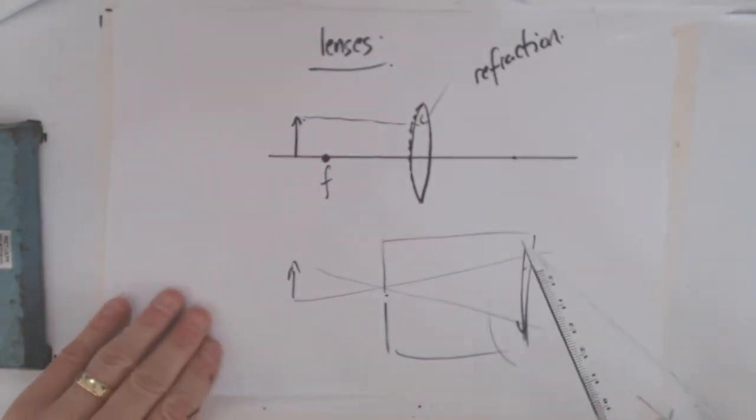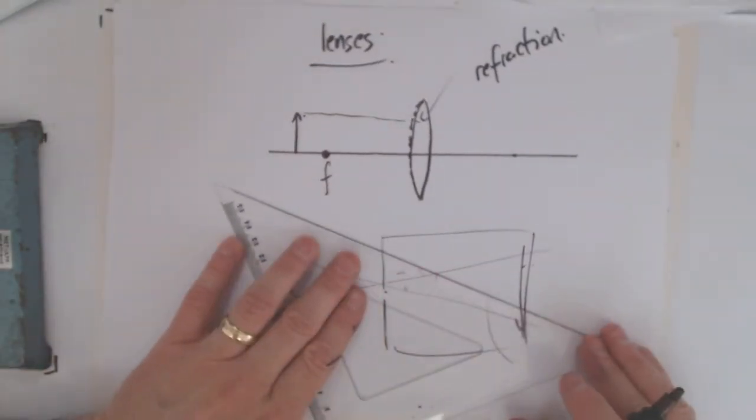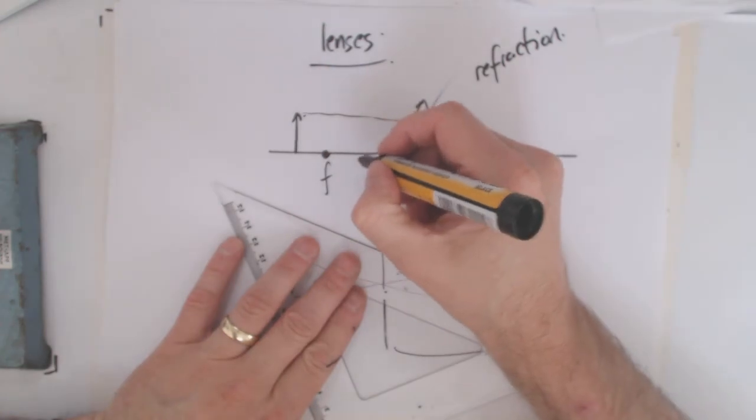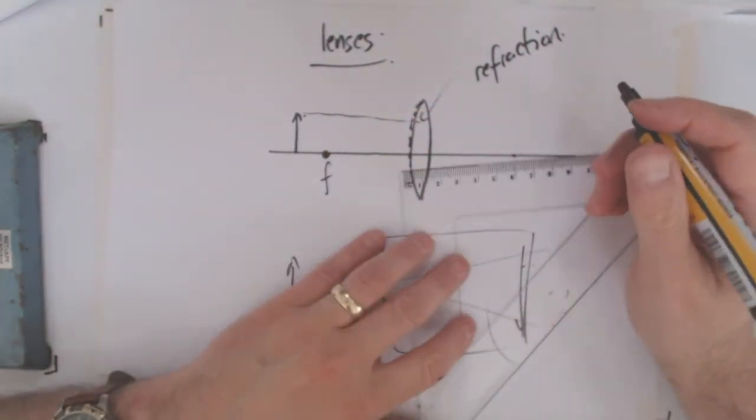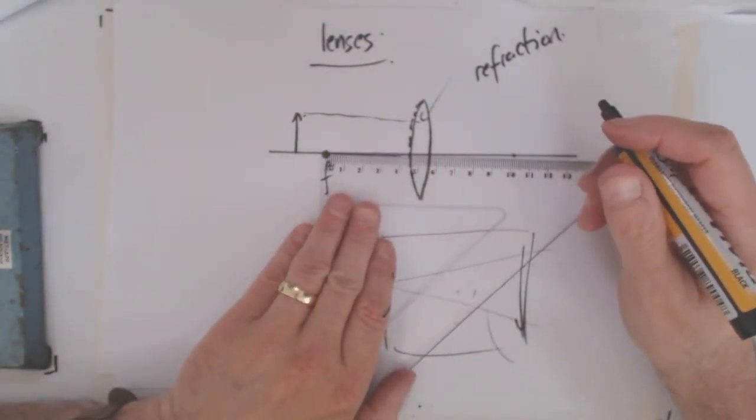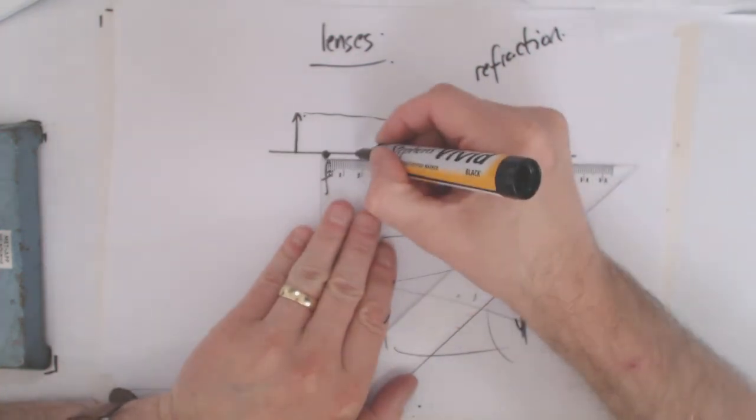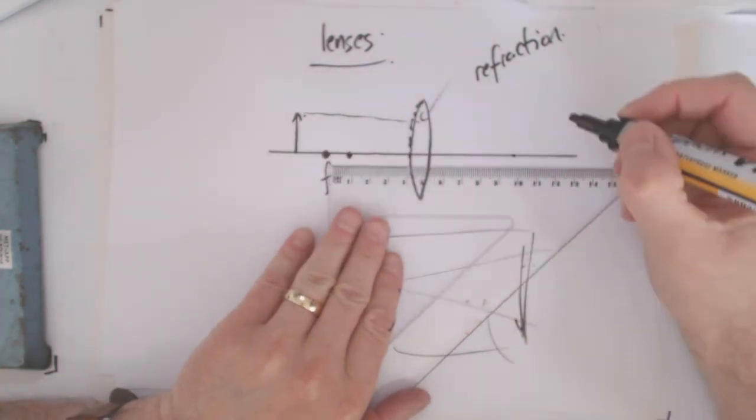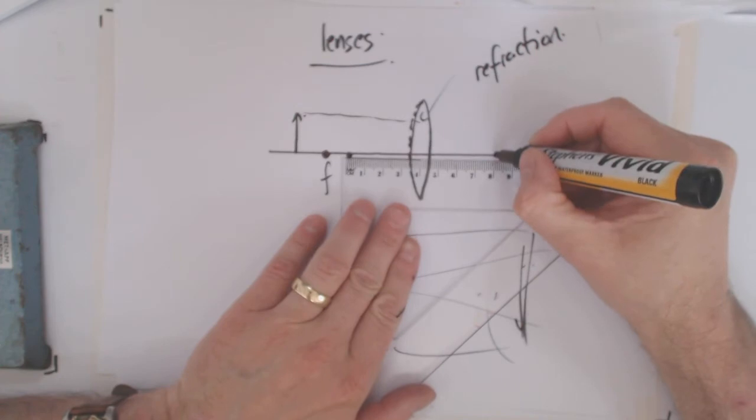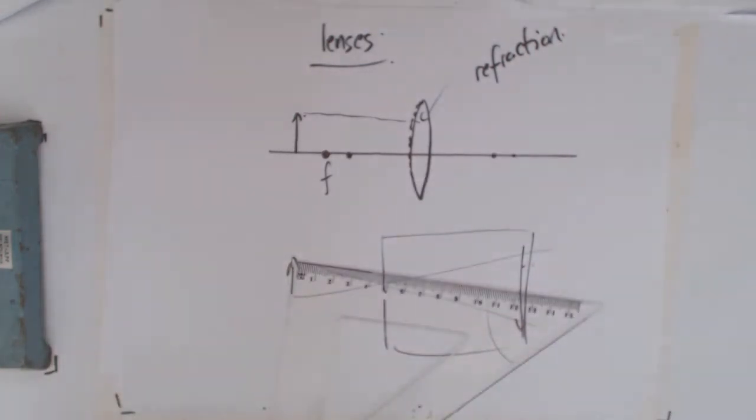I think we can do it by going back to our original diagram. Let's have a focal point that is, say, that one's five, we'll make one just four if you like. So we'll make one one centimeter there.